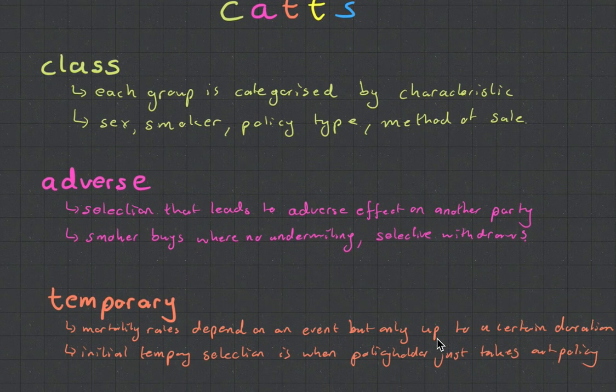Quite an interesting one is temporary selection. So, what this says is let's say you've got two people who are both age 30. Okay. The one person, the first person, has had your policy for five years. And the second person has just bought the policy now. Who's got the lighter mortality?